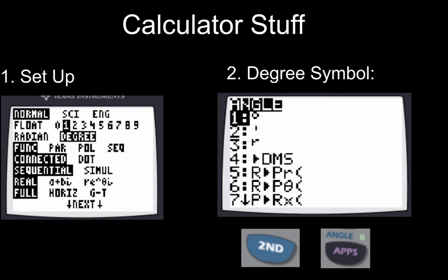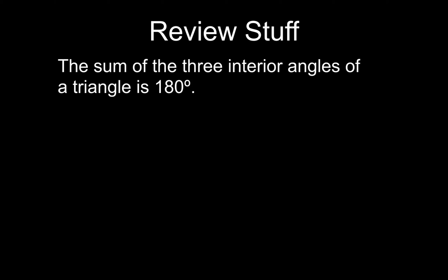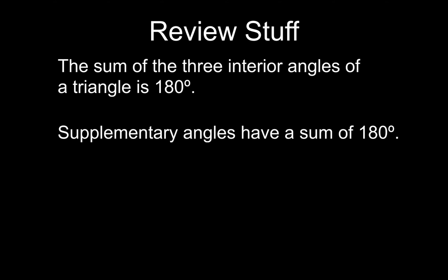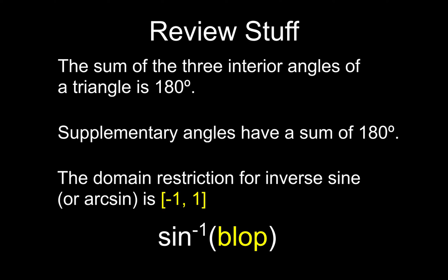Now that your calculator is set up, let's take a look at some other review stuff — this is all prerequisite knowledge, things you guys should totally know. First, you should know the sum of three interior angles of a triangle is 180. Next, supplementary angles have a sum of 180 degrees, so if you're given one angle you can find its supplement very quickly and easily. And then the last thing you need to know is the domain restriction for inverse sine or arc sine is from negative one to one, which means when you type arc sine of a value into your calculator, that value has to be within the domain restriction of negative one to one.